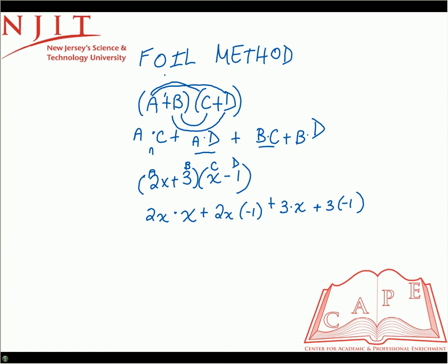Now, if we follow order of operations, we have to multiply all the little clusters together. So 2x times x is 2x squared. 2x times negative 1 is minus 2x. 3 times x is simply 3x. And then finally, 3 times negative 1 would just be minus 3. We wanted to bring together any like terms. In this case, it's the middle two terms. So negative 2x plus 3x is just positive 1x. So then our final answer would be 2x squared plus x minus 3. And there's our final answer.